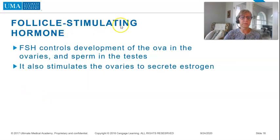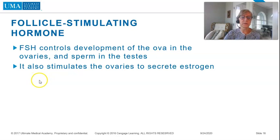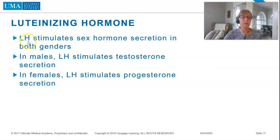Follicle stimulating hormone, FSH, controls development of the ova in the ovaries and sperm in the testes, and also stimulates the ovaries to secrete estrogen. Luteinizing hormone, LH, stimulates sex hormone secretion in both genders.